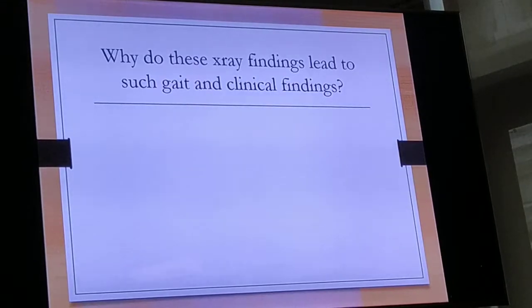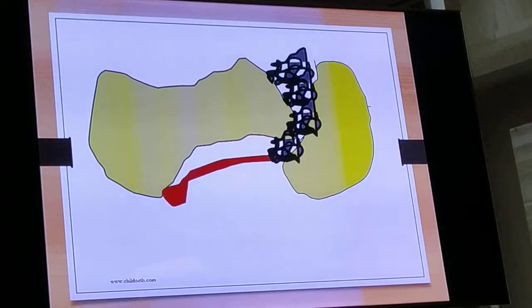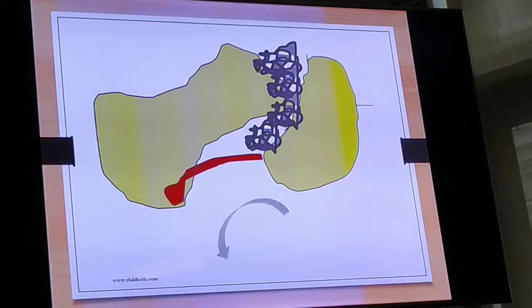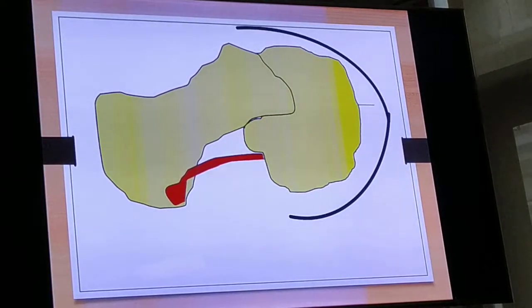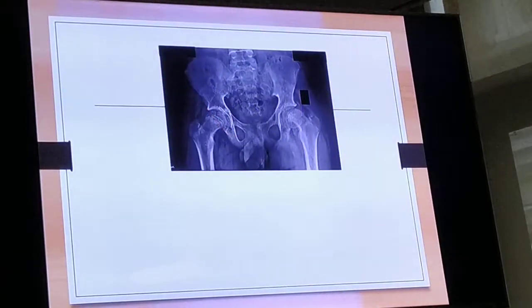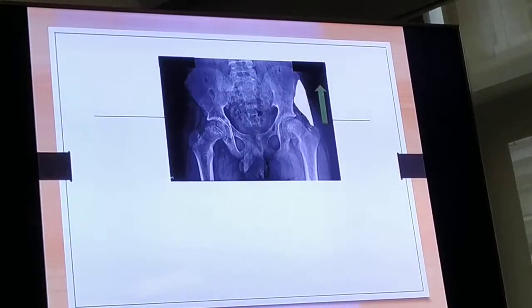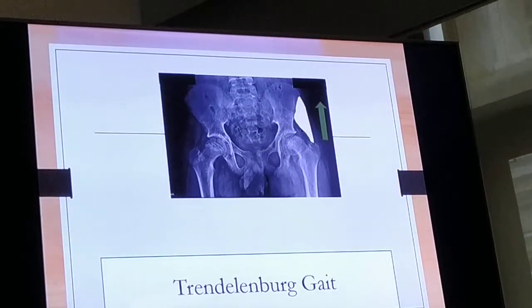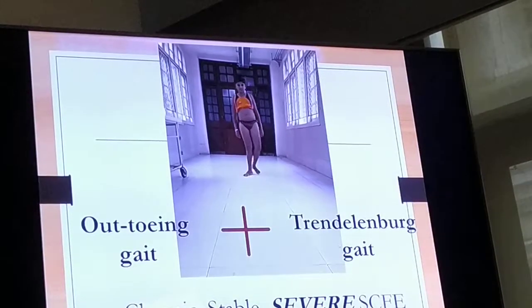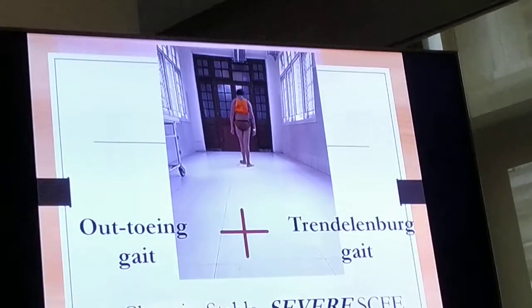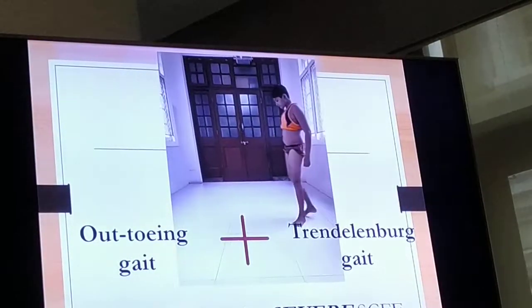Why do these X-ray findings lead to such clinical abnormalities? The callus organizes into a deformity, and because of this bump, as you flex the hip there is significant impingement on the acetabulum, leading to restricted flexion. There is significant overriding of the greater trochanter, which leads to shortening of the abductors and abductor lurch — manifested as Trendelenburg gait. This is thus a chronic, stable, severe slip. It is stable because he is able to walk, with out-toeing gait and Trendelenburg gait.